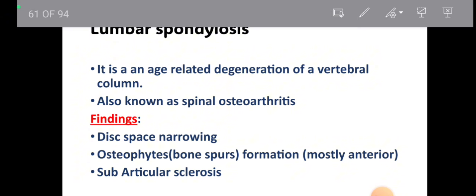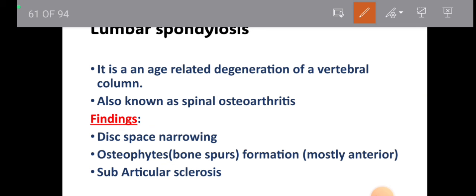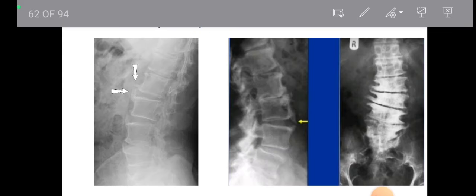Now x-rays of various conditions: first, lumbar spondylosis. It is age-related degeneration of the vertebral column, also known as spinal osteoarthritis. The findings in spondylosis include: disc space narrowing, osteophyte formation, and subarticular sclerosis — sclerosis means thickening of the bone which appears as a white shadow. You have to look for these signs in spondylosis.